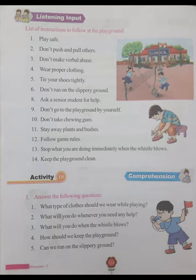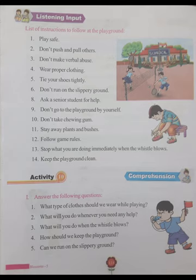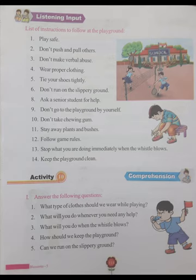Listening input: List of instructions to follow at the playground. 1. Play safe. 2. Don't push and pull others. 3. Don't make verbal abuse. 4. Wear proper clothing. 5. Tie your shoes tightly. 6. Don't run on slippery ground. 7. Ask a senior student for help. 8. Don't go to the playground by yourself. 9. Don't take chewing gum. 10. Stay away from plants and bushes. 11. Follow game rules. 12. Stop what you are doing immediately when the whistle blows. 13. Keep the playground clean.